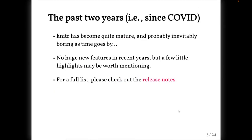Since the pandemic, I have almost lost track of time. I want to look back and see what I have done in the past two years, whether I have done anything meaningful. Knitter is over 10 years old, so it has become quite mature and probably inevitably boring as time goes by. When things become mature, they often become boring too — just like adults; kids are much more fun. But for software, being mature is actually a good thing. In this talk, I'm not going to talk about any totally exciting new features, because there aren't any huge new features in recent Knitter development. But I would like to highlight a few little things. For a full list of changes, you can check out the Knitter release notes.